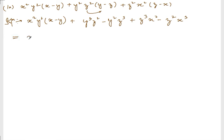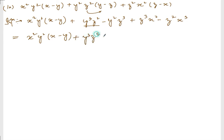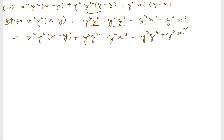So we have x² y² (x minus y). Now let us try to take common factors. We have y³ and y³, z² and z², x³. Let me write z² minus z² x³ together, and minus y² z³ plus z³ x² together.